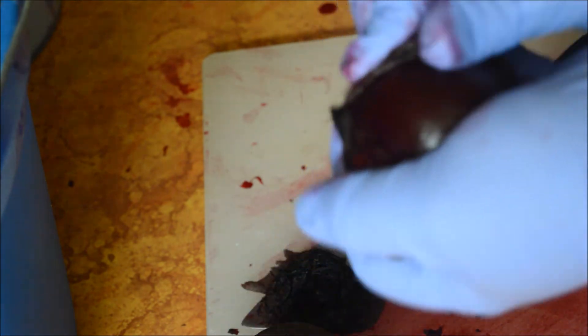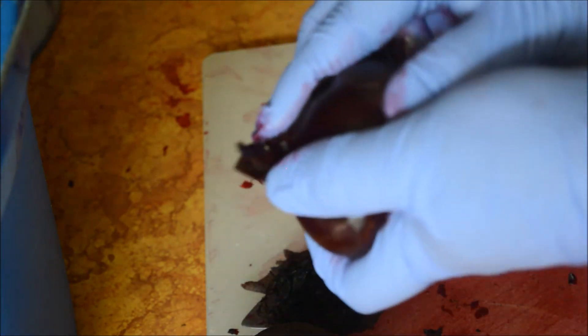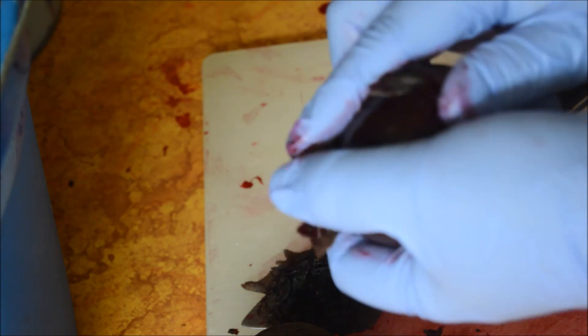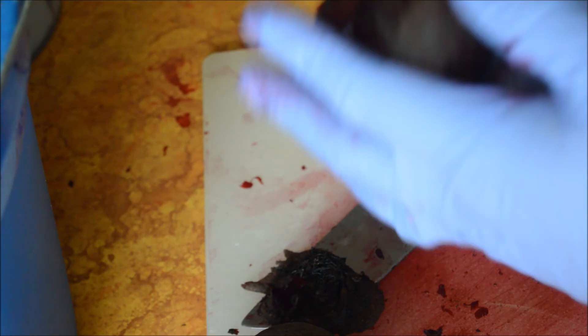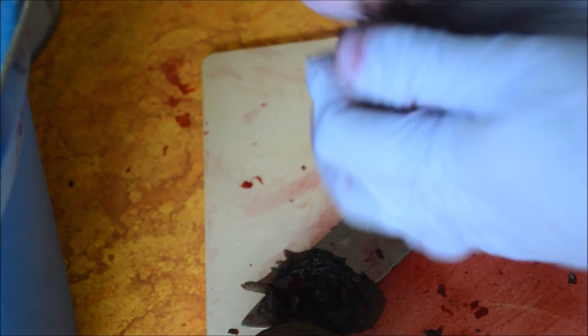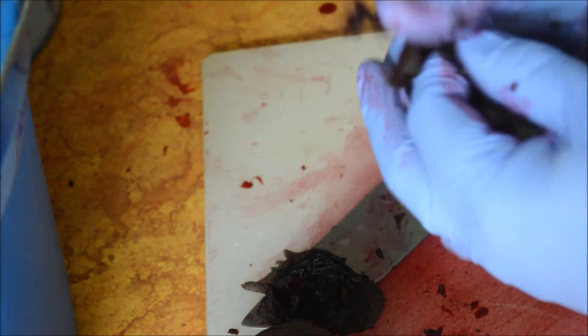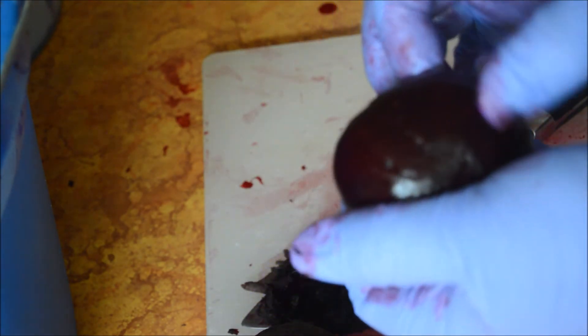So for peeling beets, this really works really well. You just run your hand across the top from the bottom down, and there you have it. That's my version of quickly peeling beets.